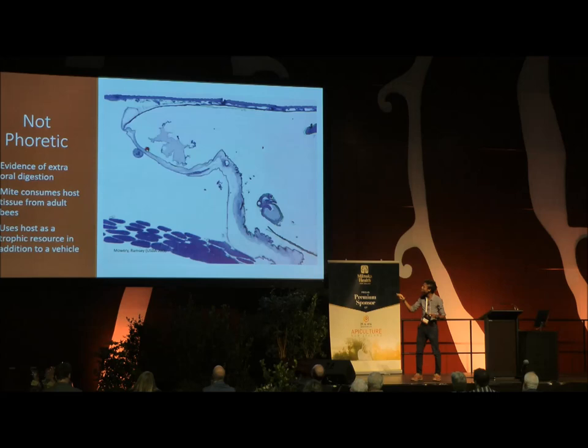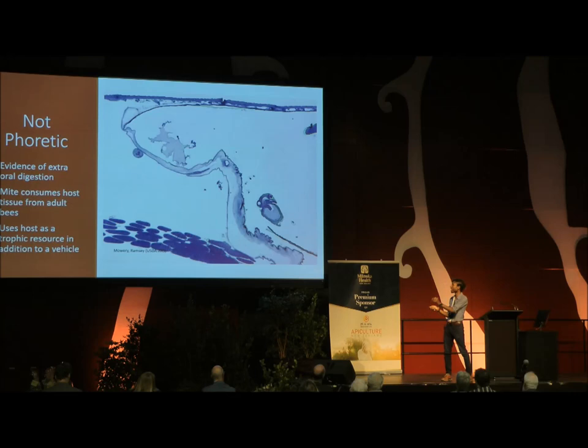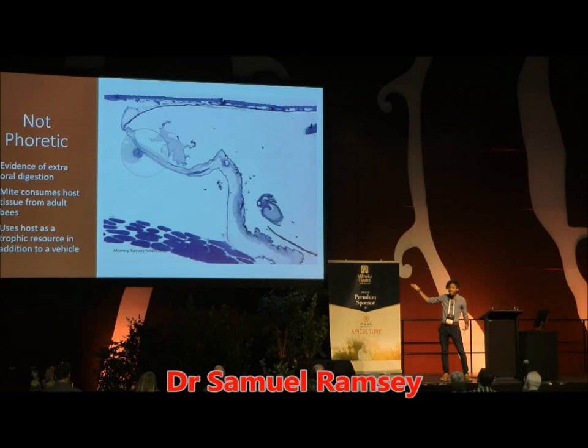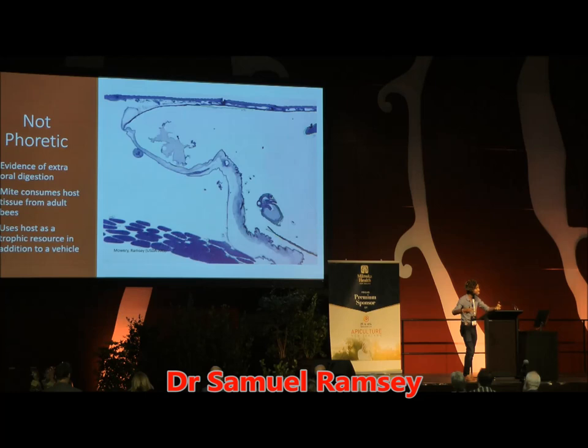We are going to look even closer. This is an even closer image. That is one cell of the fat body that happened to be left behind, and it helped us determine what this splotch of goo is over here. The technical term we use in science for this is schmutz. We kept seeing the schmutz right here inside of the bees and we were wondering what is this goo. What we found by comparing this to that one cell left behind is that this is actually the internal contents of fat body cells.